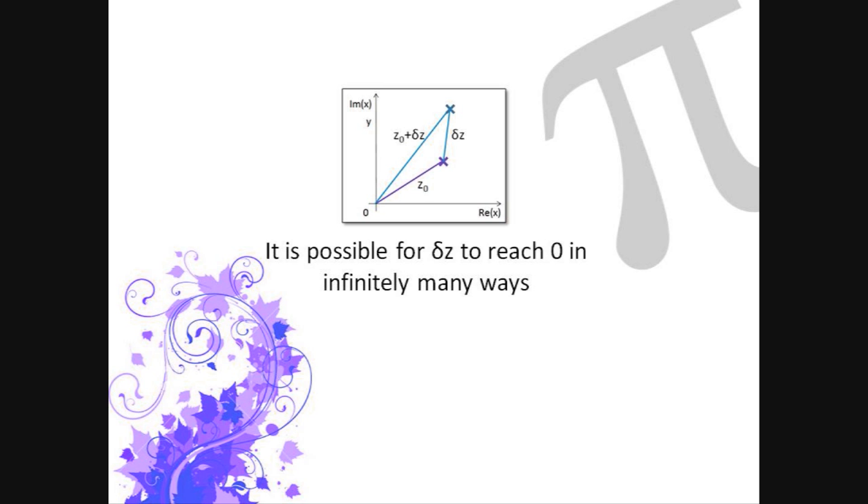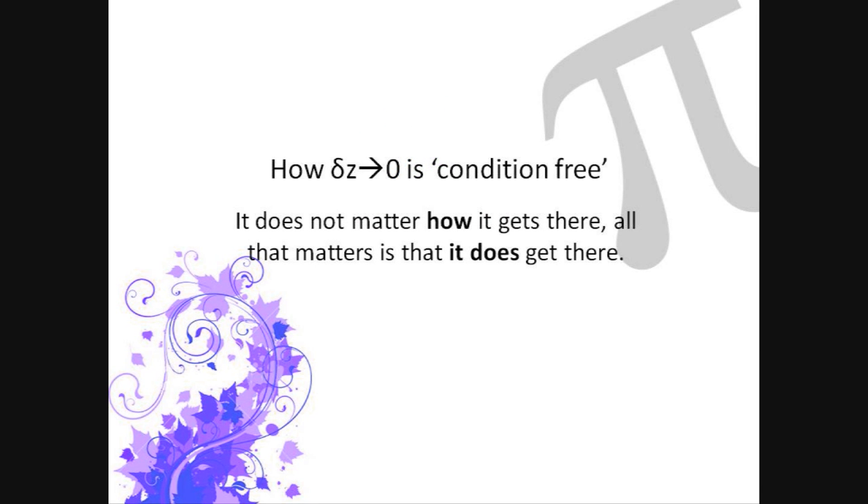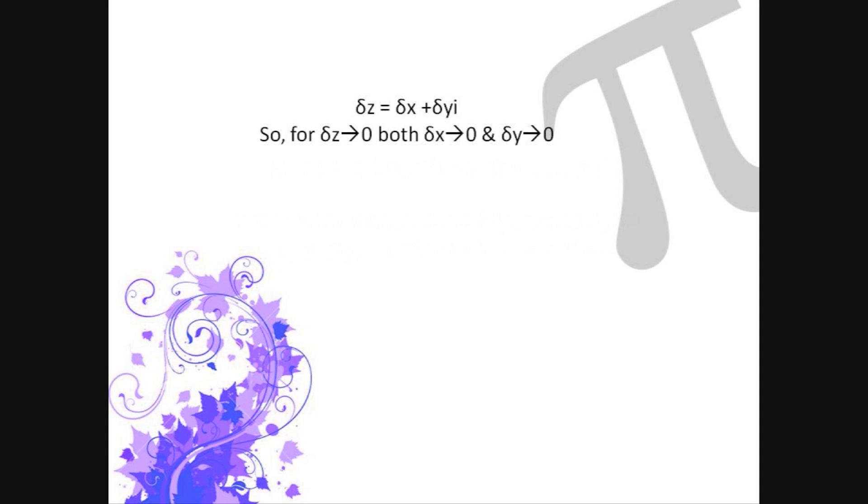We state that how delta z tends to zero is condition-free. It does not matter how it gets there, all that matters is that it does get there. The effect of this is that the complex conjugates are not differentiable. If z0 equals x plus yi, then delta z equals delta x plus delta yi. For delta z to tend to zero, both of delta x and delta y must tend to zero. Therefore, the conditions for the limit may be redefined as both delta x must tend to zero and delta y must tend to zero.